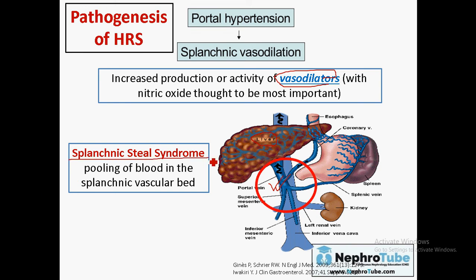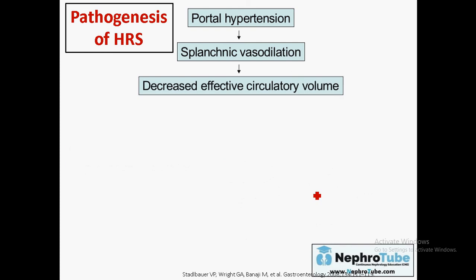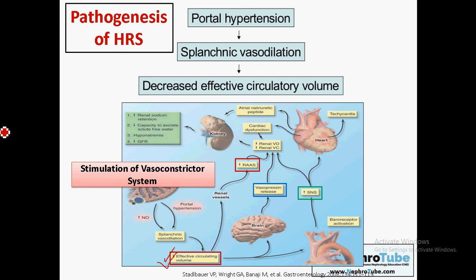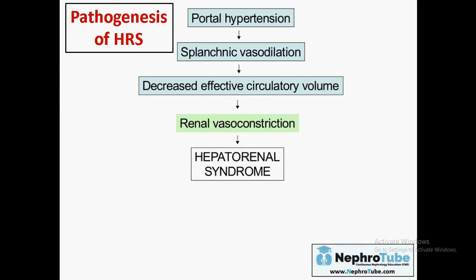Portal hypertension causes splanchnic vasodilation due to release of vasodilators. This is called splanchnic steal syndrome — blood is pulled from the systemic circulation into the splanchnic vascular bed, causing decreased effective circulatory volume. When effective circulatory volume decreases, this activates compensatory physiological mechanisms: the renin-angiotensin-aldosterone system, ADH release, and the sympathetic nervous system, which cause renal vasoconstriction and decreased renal perfusion.